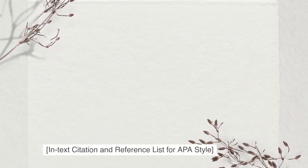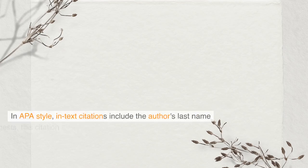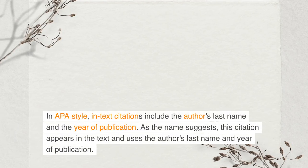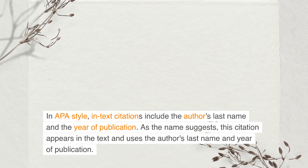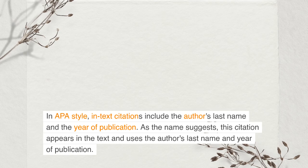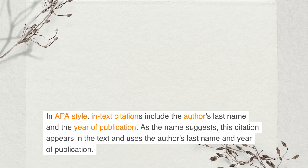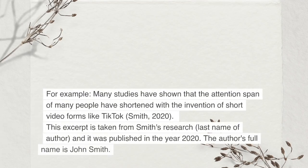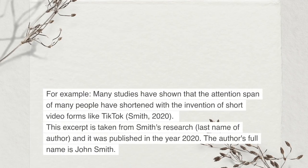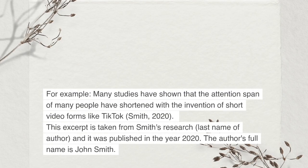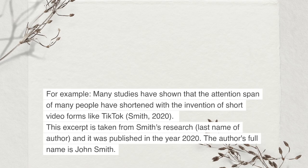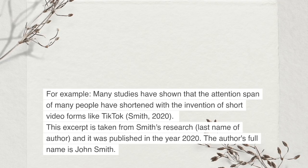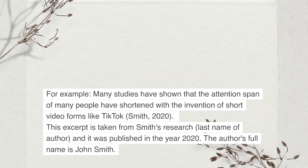In-text citation and reference list for APA style. In APA style, in-text citations include the author's last name and the year of publication. For example: 'Many studies have shown that the attention span of many people have shortened with the invention of short video forms like TikTok.' (Smith, 2020). This excerpt is taken from Smith's research — the last name of the author — and it was published in the year 2020. The author's full name is John Smith.